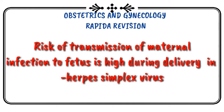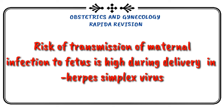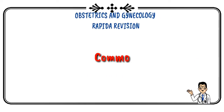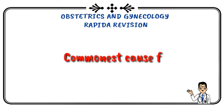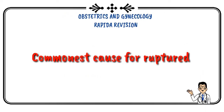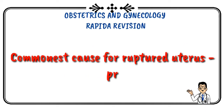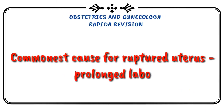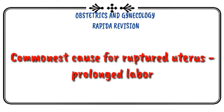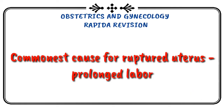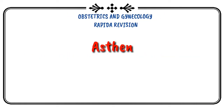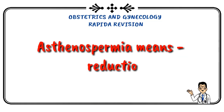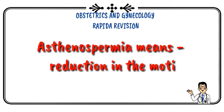Commonest cause of ruptured uterus is prolonged labour. Asthenospermia means reduction in sperm motility.